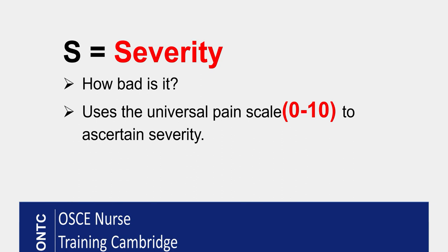The next one is S, which is Severity — probably the easiest one, because we just need to know how bad the pain is. We use the universal pain tool of zero to ten: zero being no pain and ten being the worst pain. Ask your patient to give you a verbal score, which will tell you how bad the pain is and whether it is mild, moderate, or severe, so we can manage or treat it accordingly.